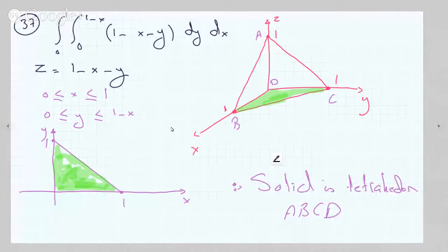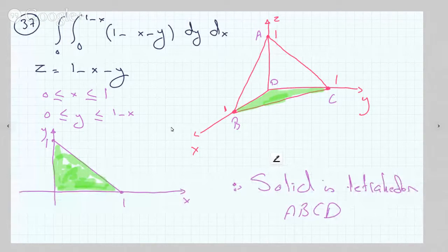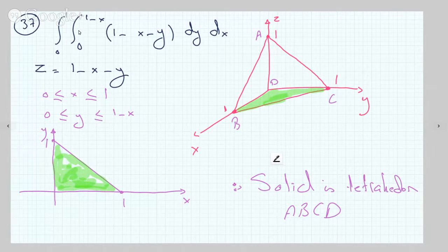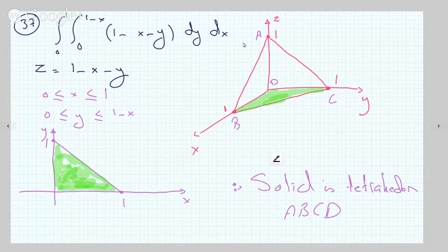And the question says to sketch the region of integration and define the solid represented by this integral on top. Of course the bounds, these represent the outer bound, the one on the outside for x. x is in between 0 and 1, and the inner bounds are for the y, since y happens to be on the inside.